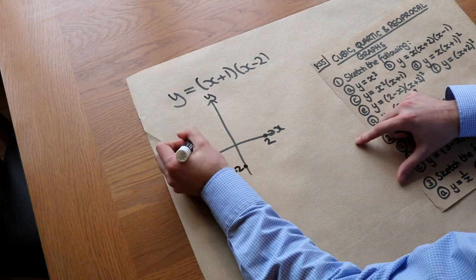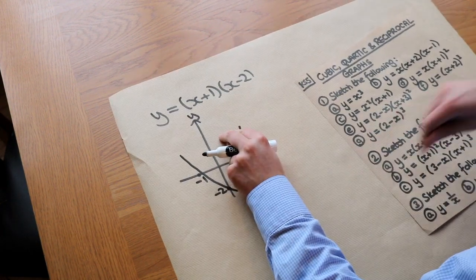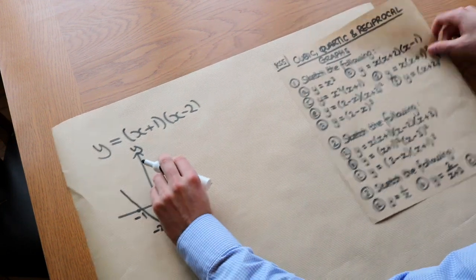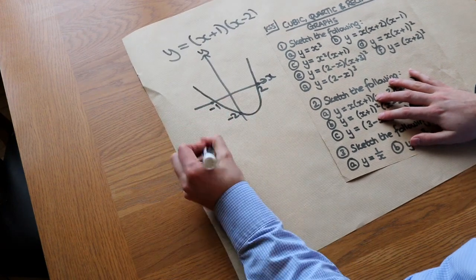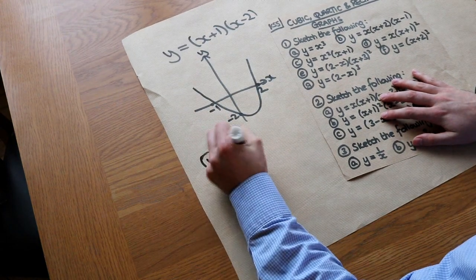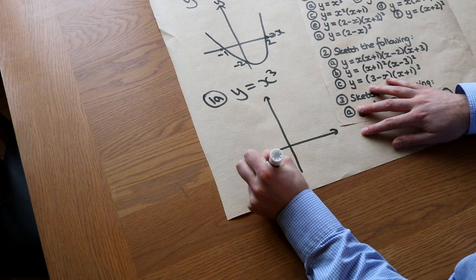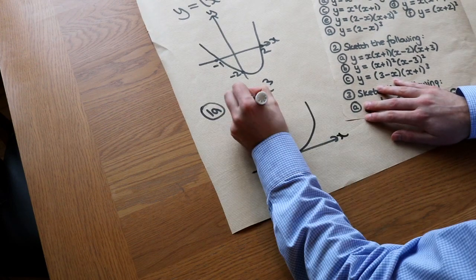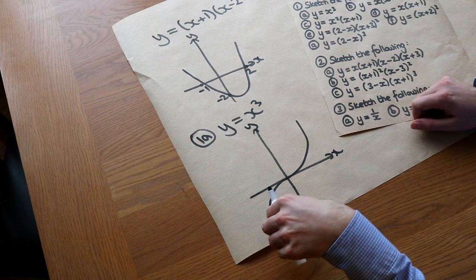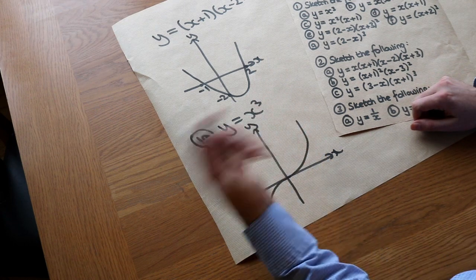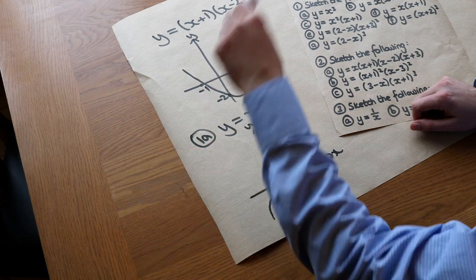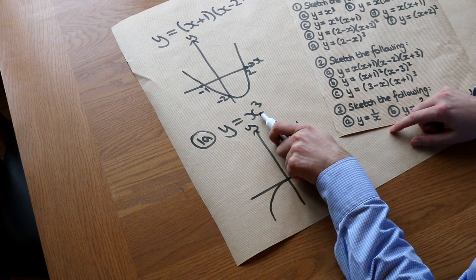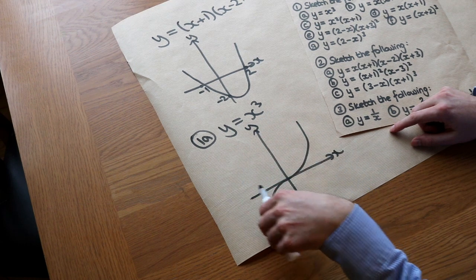Now we can sketch it. We can use a similar principle when we sketch cubics. The general shape of a cubic is this — if we sketch y equals x cubed, it has this shape. A cubic basically has two turns, it turns right and then turns left, or vice versa. This is a positive cubic, because there's a positive number in front of the x cubed, so it will be going uphill.